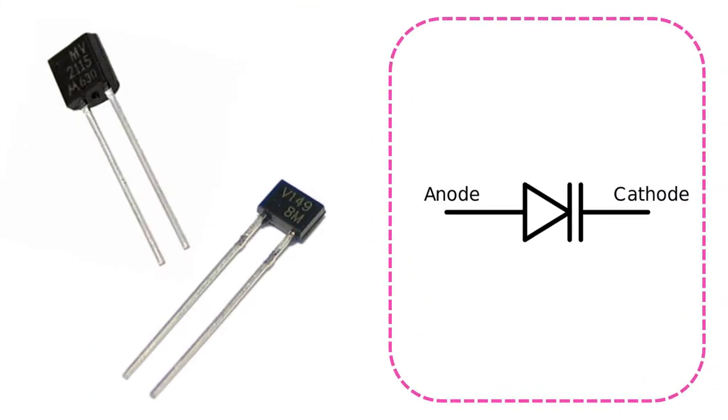This symbol is used for varicap diodes that act as variable capacitors. A line similar to the capacitor symbol has been added at the end of the normal diode symbol. The varicap diode offers a capacitance whose value changes depending on the voltage, so it can be used like a regulated capacitor.